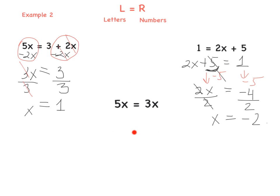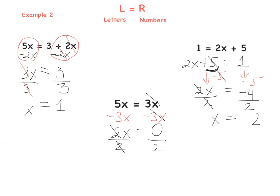The last question here: we have 5x equals 3x. Following the rule — letters on the left, numbers on the right — we need to get rid of 3x from the right. Simply take it away: minus 3x from both sides. Now 5x minus 3x is 2x on the left, and 3x minus 3x is 0 on the right — there is nothing remaining. So 2x equals 0. Divide by 2 on both sides: x equals 0 divided by 2, which is 0. Done.